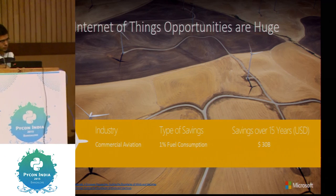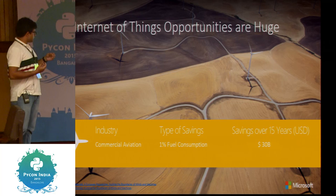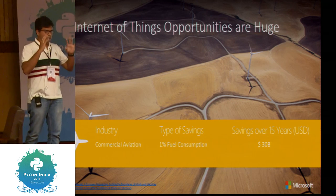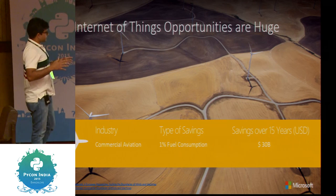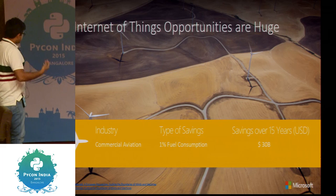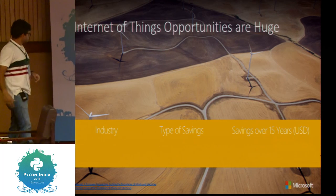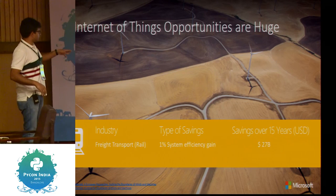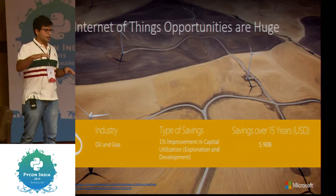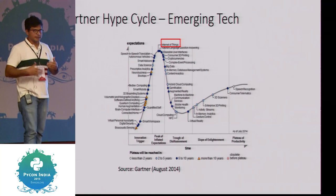IoT can help save enormous amounts of money. In commercial aviation, saving just one percent of fuel consumption gives 30 billion dollars in savings over 15 years. In energy and gas, a one percent plant efficiency gain equates to 66 billion dollars. Healthcare saves 63 billion, and oil and gas 90 billion dollars. These are the reasons enterprises are pushing towards IoT, and why we should focus on building solutions on top of it.